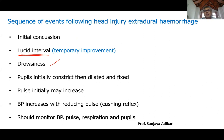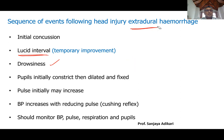After the lucid interval, the person becomes drowsy over several hours. At the time of the blow, a skull fracture occurred and extradural hemorrhage started. As the hematoma develops, intracranial pressure increases — this is the cause of the drowsiness from brain compression. The oculomotor nerve gets compressed: initially the pupil may constrict briefly, then it dilates and becomes fixed — not constricting to light. The pupillary light reflex is lost.